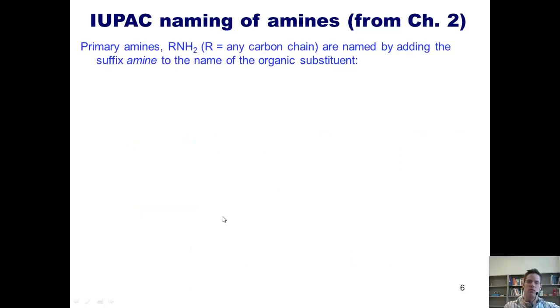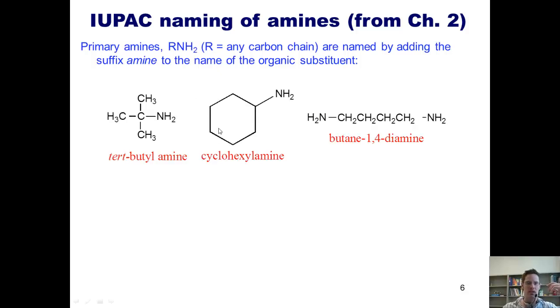Primary amines that have this generic formula are named by adding the suffix amine to the name of the organic substituent. Thus, for this example, we have a tert-butyl group. I could call this primary amine tert-butylamine. Here I have a cyclohexane, but I have an amine coming off of it, so I could call it cyclohexylamine. You could also call it cyclohexanamine. This example right here has two amines, so it's a diamine stuck to a butane, so I call it butane-1,4-diamine. The numbers are added to indicate which positions the nitrogens are stuck to.